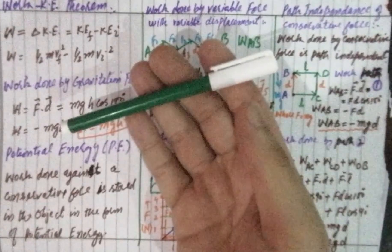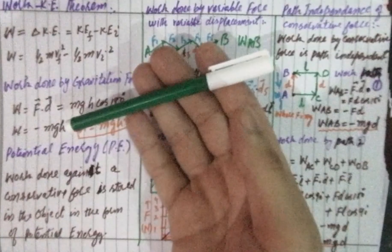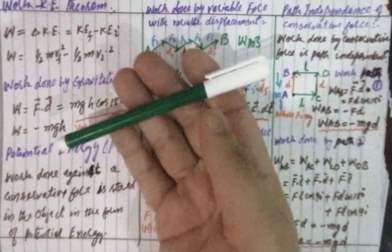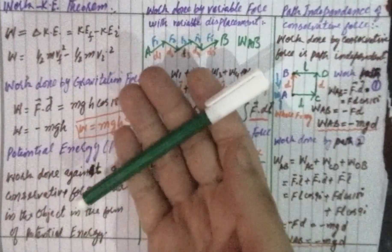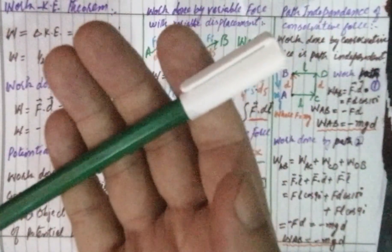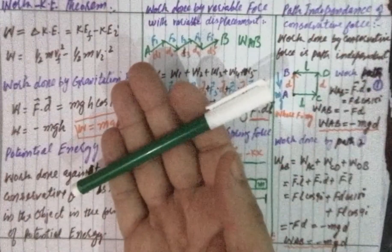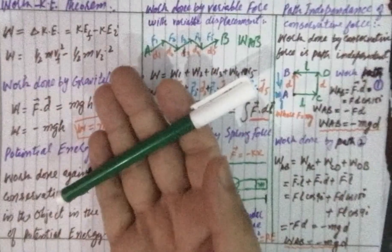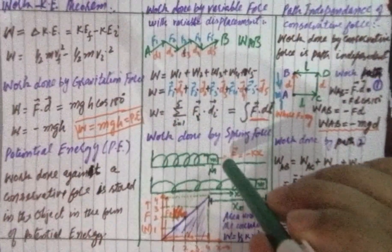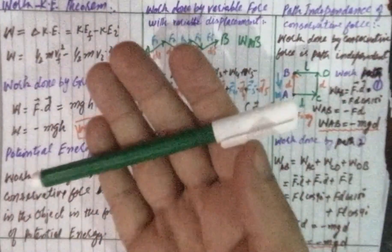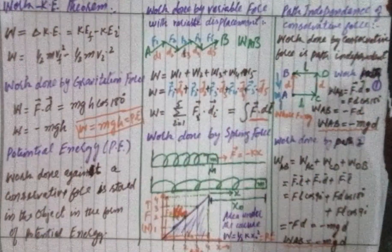Work done by the gravitational force from path 1 was -mgd and from path 2 is also -mgd, so gravitational force is a conservative force — its work is path independent. Note that I am calculating work done by the gravitational force, not by me. My work done on the object is not path independent, but the gravitational force is path independent, hence it is conservative.